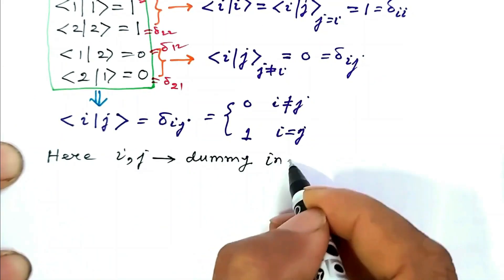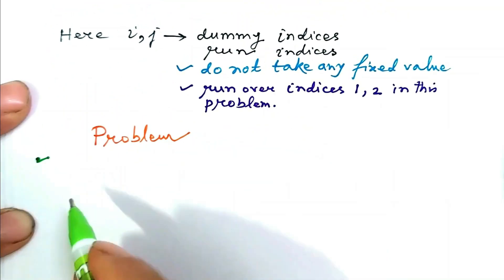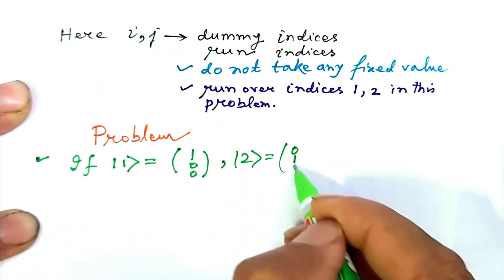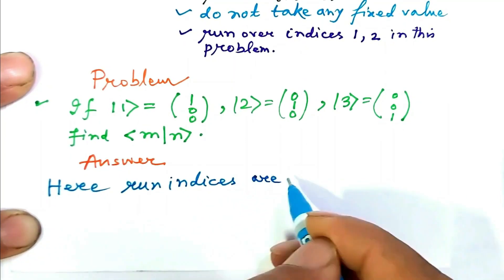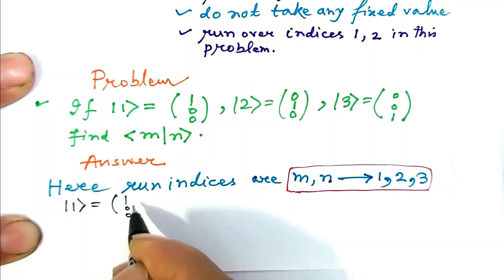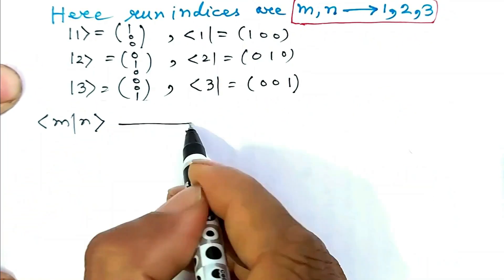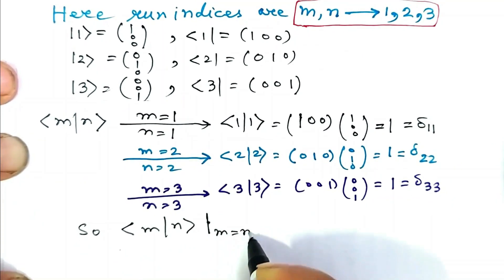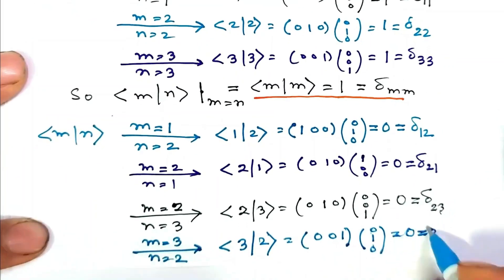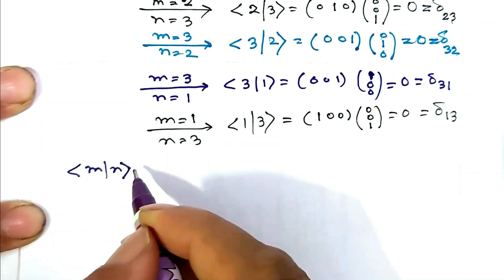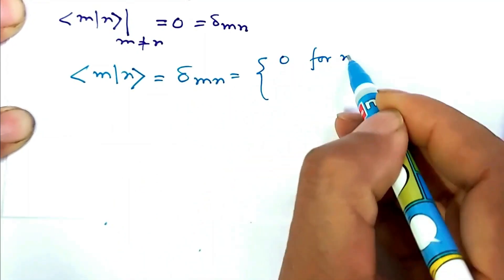We can write all relations in compact notation as bra i ket j = δ_ij, where i and j are dummy (run) indices running over 1 and 2. Next problem: if ket 1 = (1,0,0), ket 2 = (0,1,0), ket 3 = (0,0,1), find the inner product bra m ket n. The run indices are m and n taking values 1, 2, and 3. Evaluating bra 1, bra 2, bra 3 from the corresponding kets, the inner product bra m ket n = 1 for m = n (written as δ_mm) and zero for m ≠ n. Combining, bra m ket n = δ_mn.